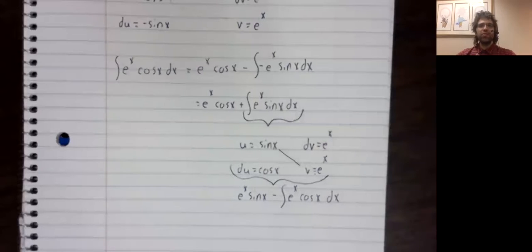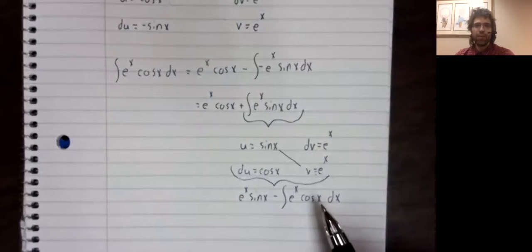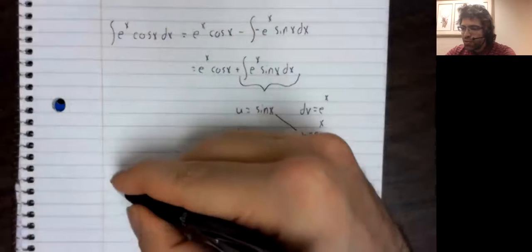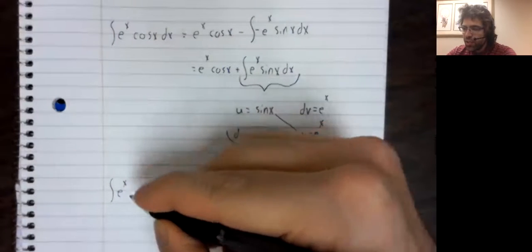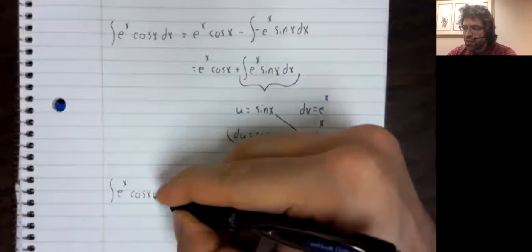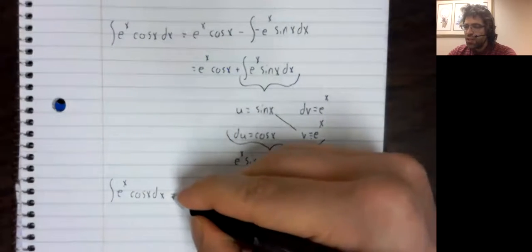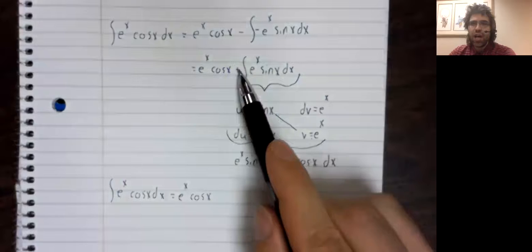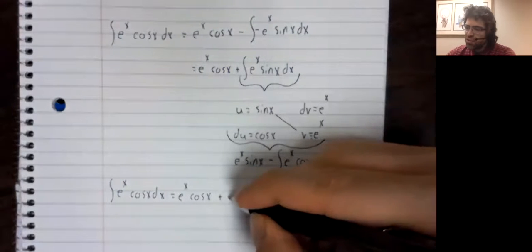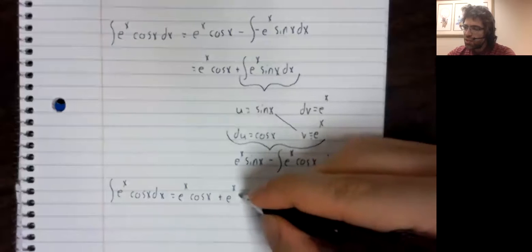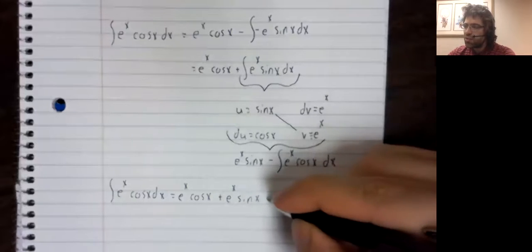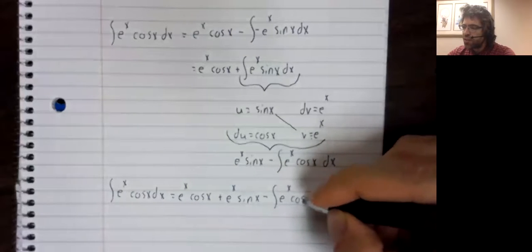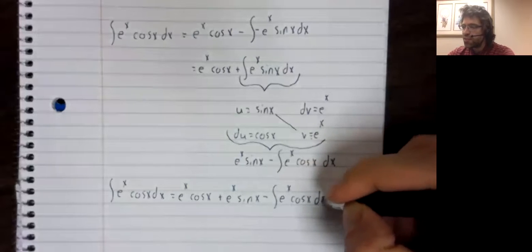So that's not good, we're right back where we started, except that now let me write all of this down. E to the x times the cosine of x dx equals e to the x times the cosine of x plus this integral. So plus e to the x times the sine of x minus the integral of e to the x times the cosine of x dx.